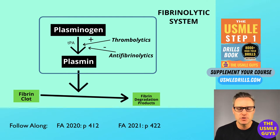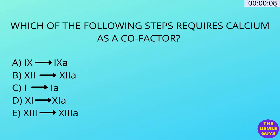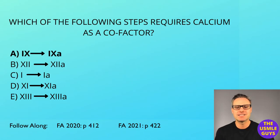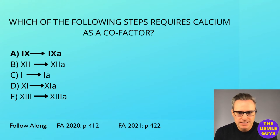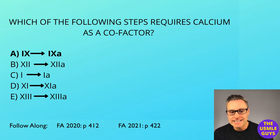Pause to try and figure out the next question and then come back to discuss. The correct answer here is A, 9 to 9A. This is a conversion step that requires calcium. There's no trick here — you just need to know the steps and which cofactors are needed and where.